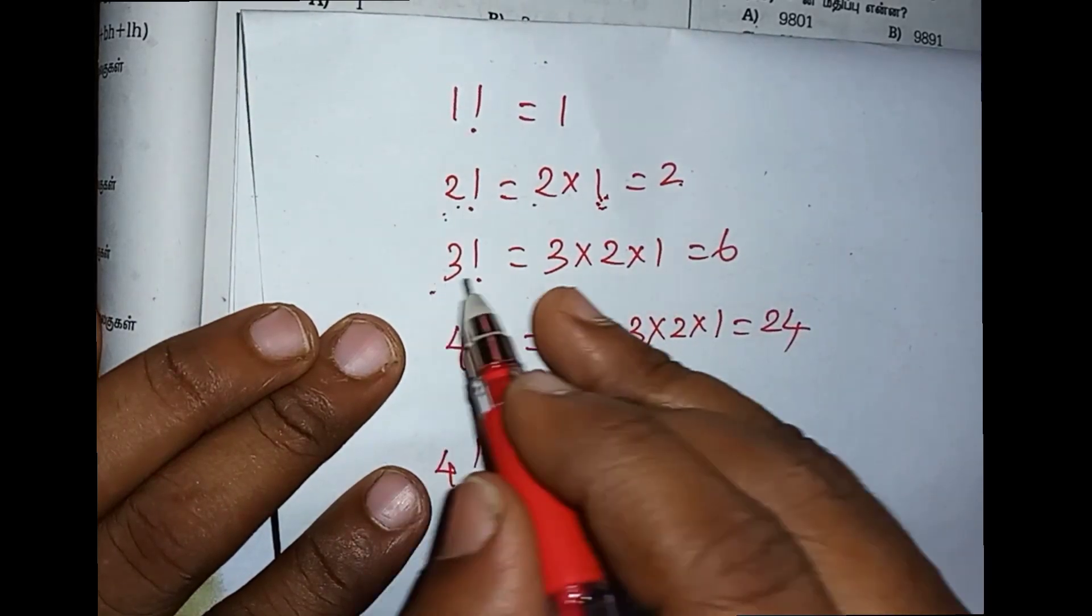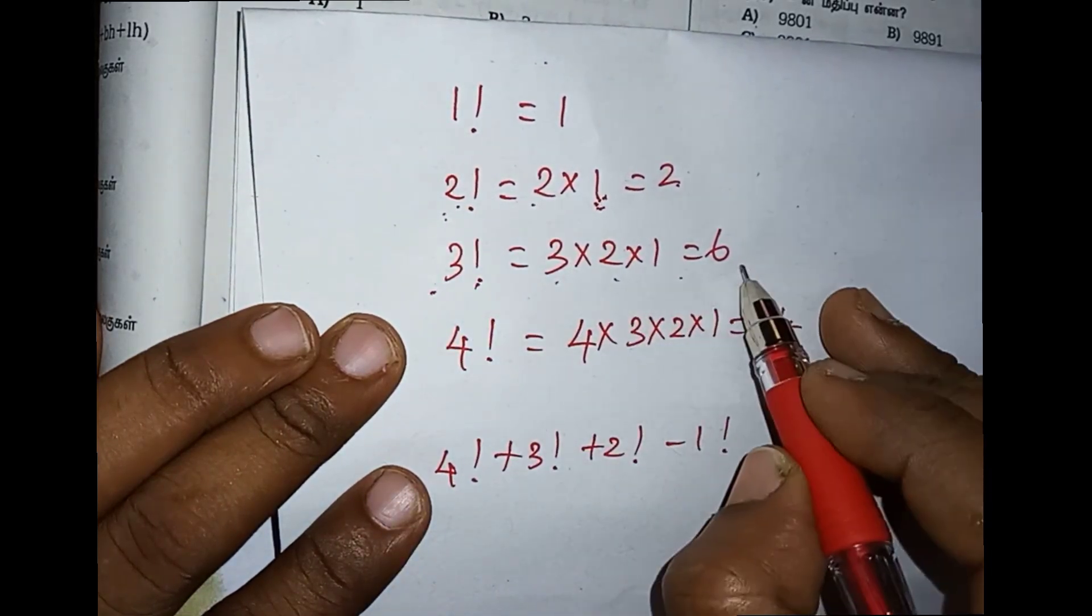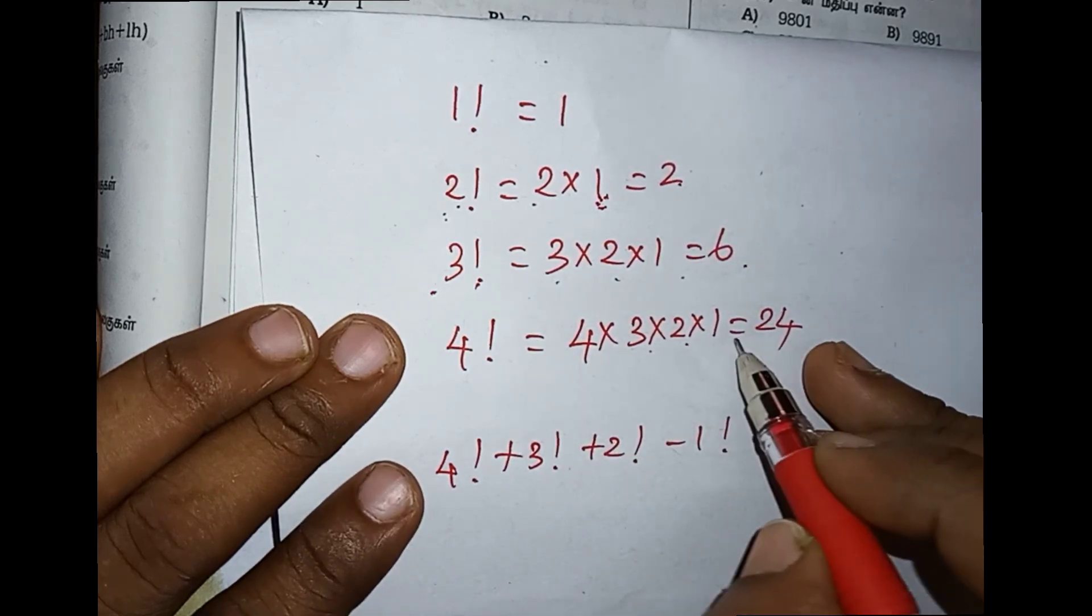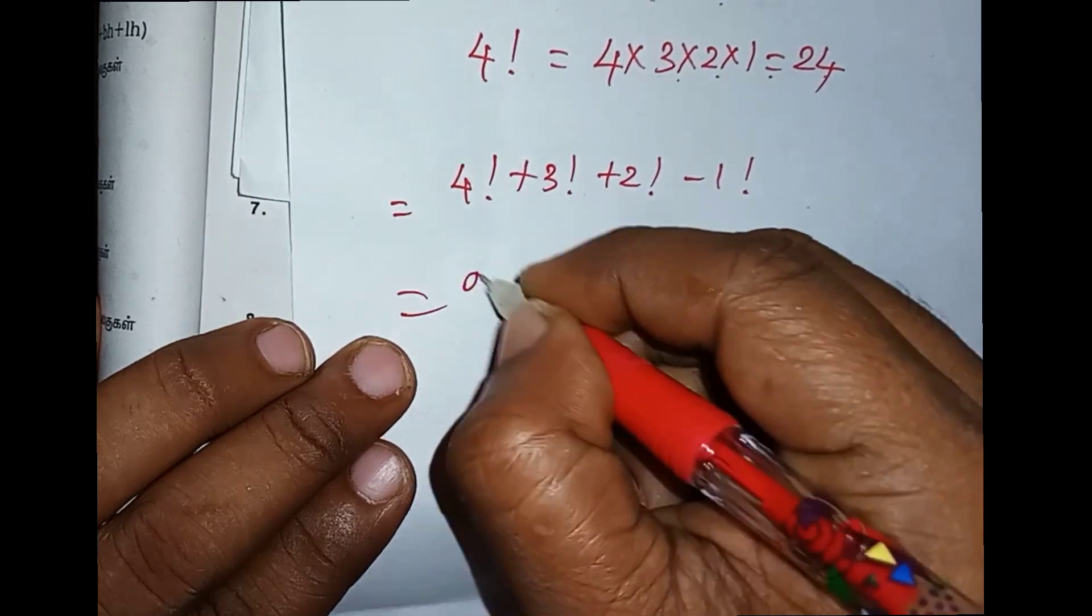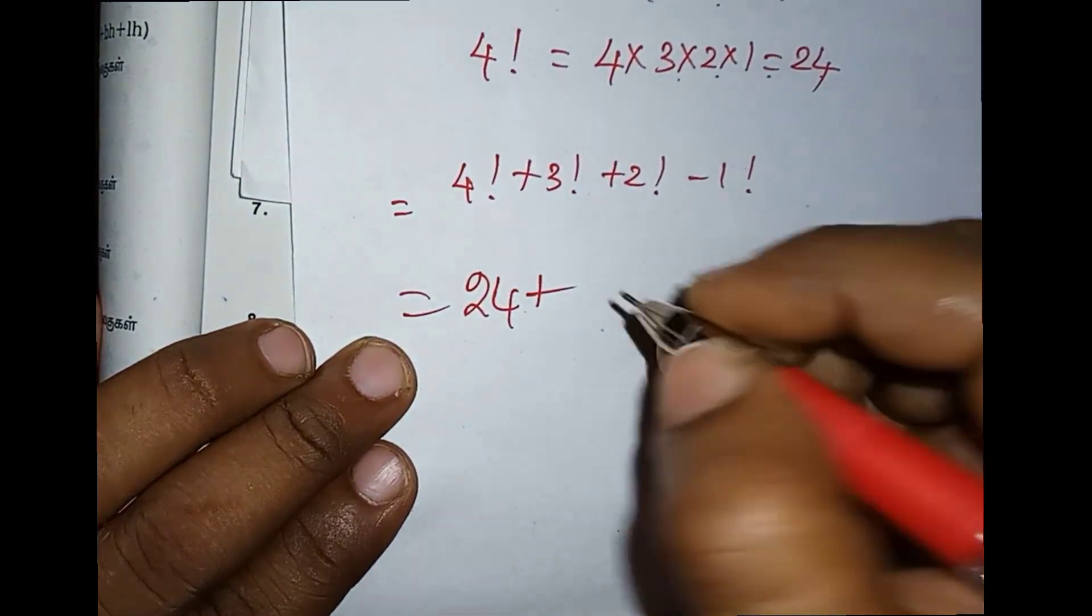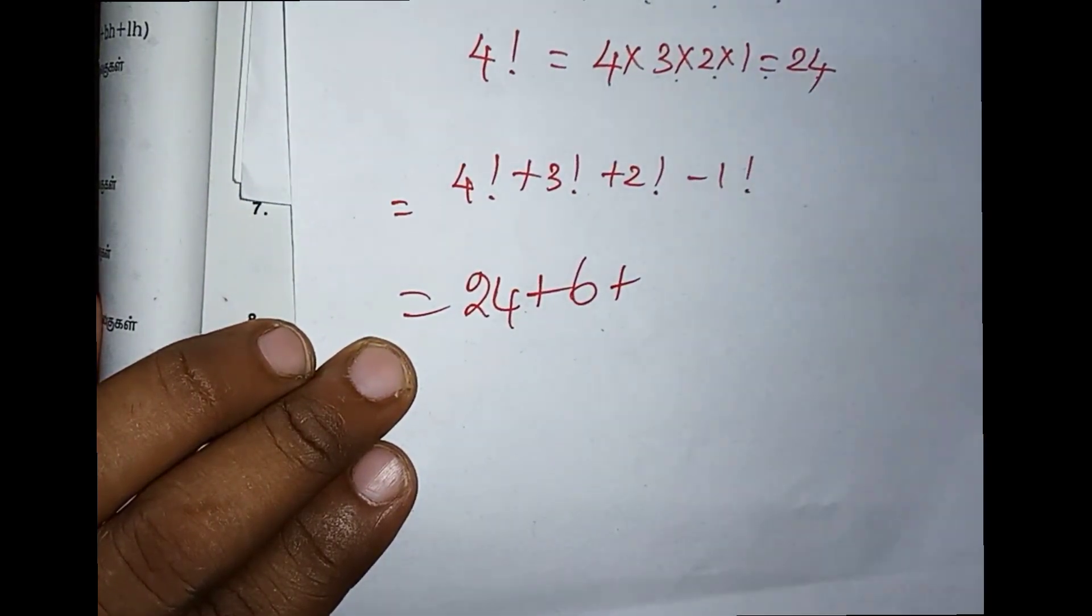So 2 is 2. 3 factorial value is 3 into 2 into 1 equals 6. 4 factorial value is 4 into 3 into 2 into 1 equals 24. Now we have 4 factorial value 24, 3 factorial value 6, 2 factorial value 2, minus 1 factorial value 1.